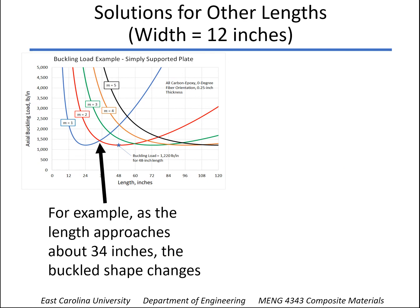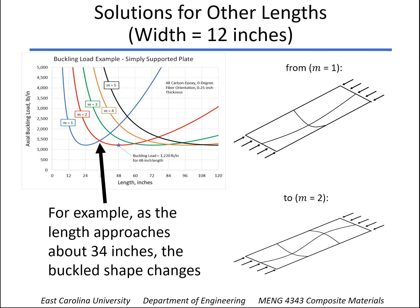So for shorter than 34 inches, we have M equals 1. Greater than 34 inches, it switches over to M equals 2, which is what we have right here. And you can see, if we go on to a length of about 60 inches, then the critical shape would go from two half sine waves to three.